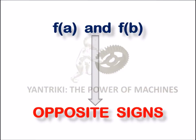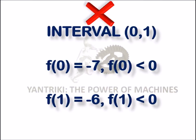In this case, if I consider [0, 1] as the interval, I get f(0) = -7, which means f(0) < 0, and f(1) = -6, which means f(1) is also less than 0.